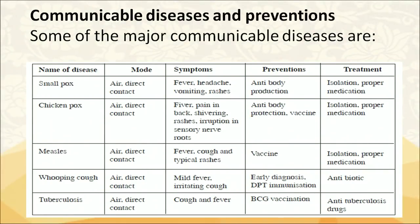A chart of communicable diseases covers the name of the disease, mode of spread, symptoms, preventions and treatments. For example, smallpox: its mode of transfer is air and direct contact; symptoms include fever, headache, vomiting and rashes; prevention is through antibody production; and treatment involves keeping the affected person in isolation with proper medication.